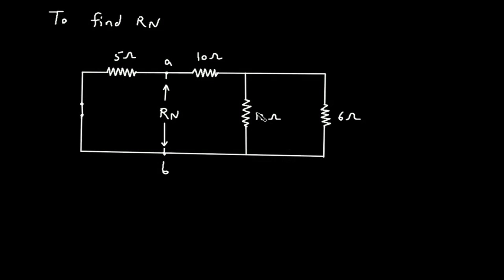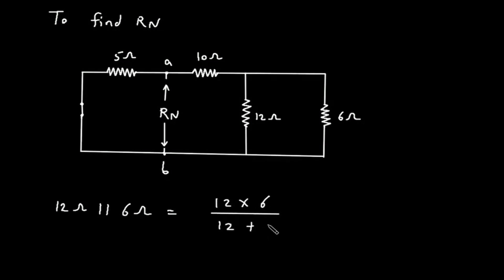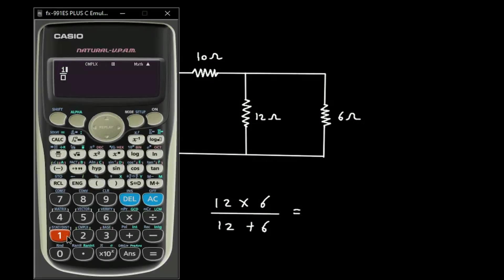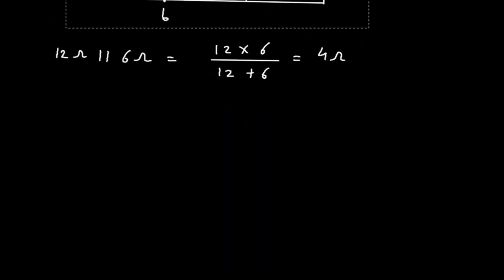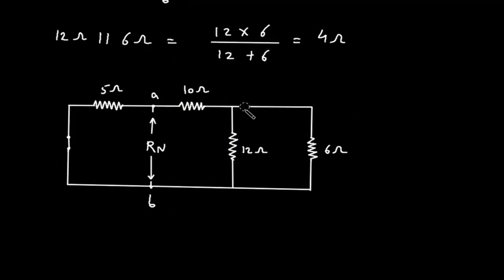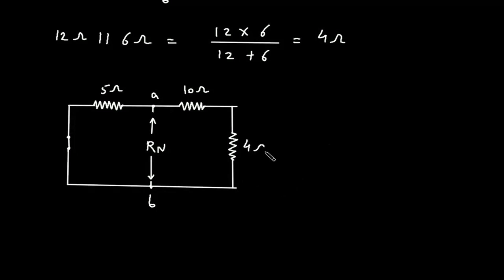We have to calculate this Rn. Here we can see this 12 ohm and this 6 ohm are connected in parallel, so 12 ohm parallel with 6 ohm. This will be 12 into 6 divided by 12 plus 6, which gives 4 ohm. So we can replace these two resistors with a single 4 ohm resistor. Now, here we can see this 10 ohm and 4 ohm are connected in series, so this will be 14 ohm.